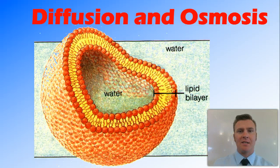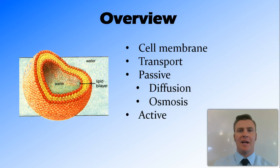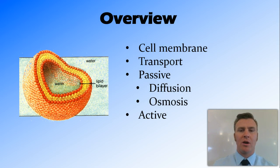In this video we're going to look at diffusion and osmosis. I'm going to talk briefly about the cell membrane and then we're going to look at the different types of transport that occurs through the cell membrane. Passive transport, which doesn't require energy, including diffusion and osmosis. And then I'll talk about active transport.